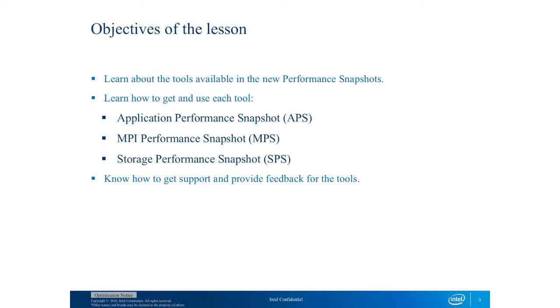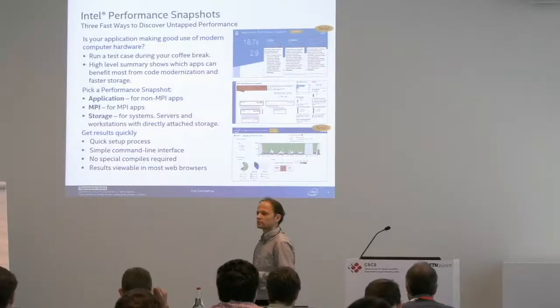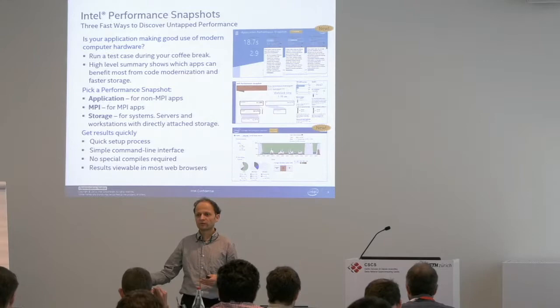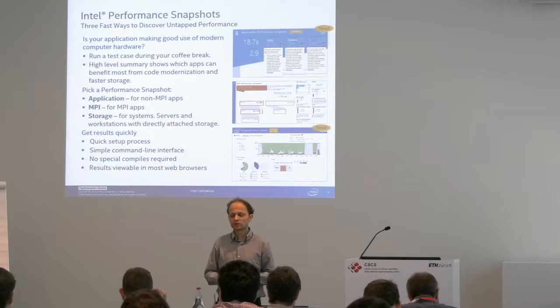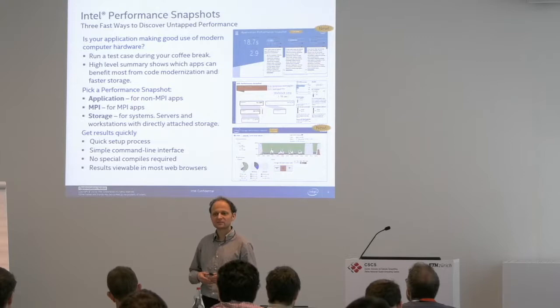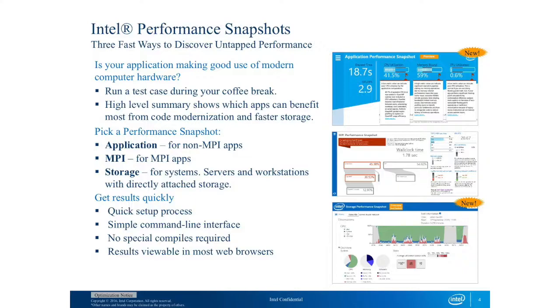Essentially, you run a test case and the intranode performance is just using either sampling to sample performance numbers from the CPU or it uses the performance monitoring unit. For the intranode performance, it seemed to be sampling. People at Bologna tried this and found that it used sampling for gathering the performance results, which obviously has some impact on runtime of the application itself.